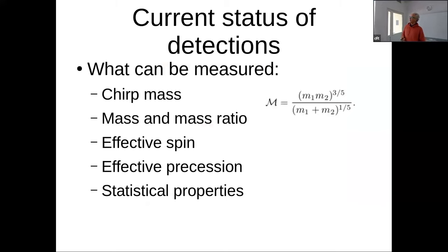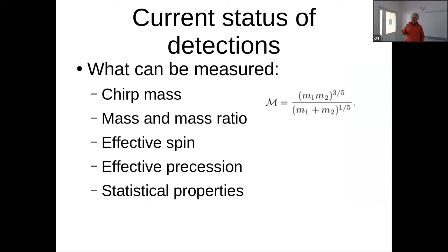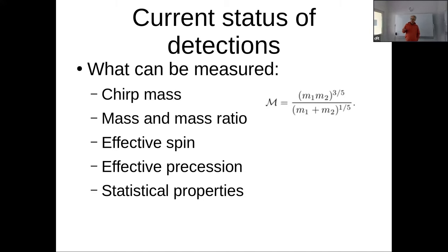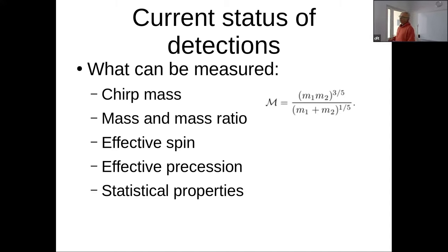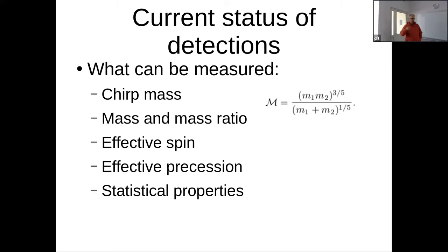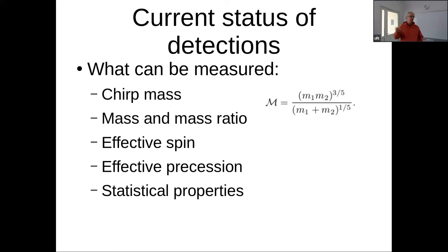So what can be measured for each source? One main parameter is the chirp mass — a specific combination of the component masses. We can also measure the total mass and the mass ratio, though with limited accuracy. We can measure two quantities related to black hole spins: the effective spin and the effective precession. And we can measure statistical properties like rates or densities of these objects. With chirp mass and mass ratio, we can get the individual masses.